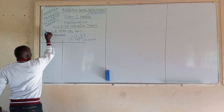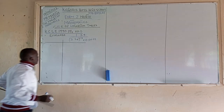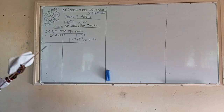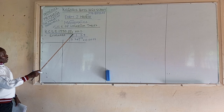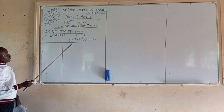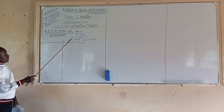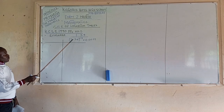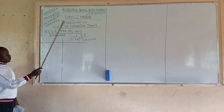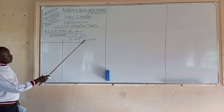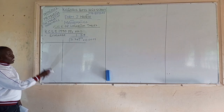So we have KCSE 1990 question number one. We have: evaluate 1.34 divided by, in brackets, 5.24 raised to the power 0.8, times 10 times 0.0029.